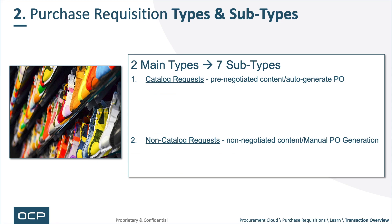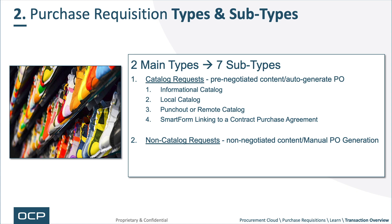Purchase requisition types and subtypes: there are two main types — catalog and non-catalog — although the word 'catalog' is a little misleading because it refers to anything that's really pre-negotiated content. Catalog requests are pre-negotiated content and they usually auto-generate a PO. Subtypes include: informational catalog; local catalog, which are items that reside in Fusion; punch-out or remote catalog, where the catalog or its items belong at the supplier; smart forms (also called request forms in the application), which link to some kind of agreement for auto-generation; and requests coming from other external or Fusion applications.